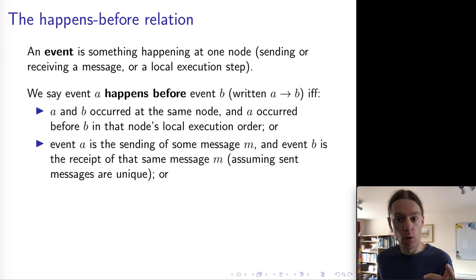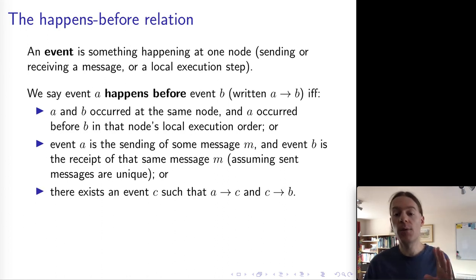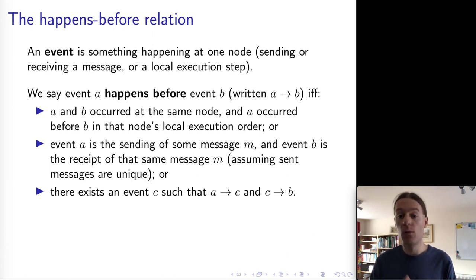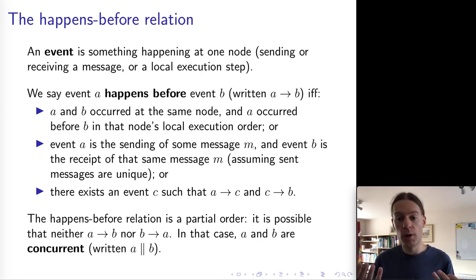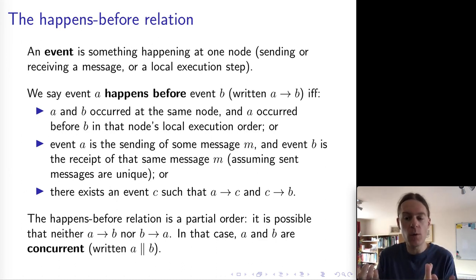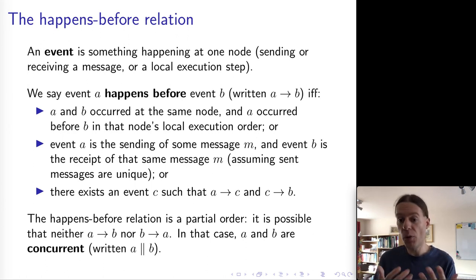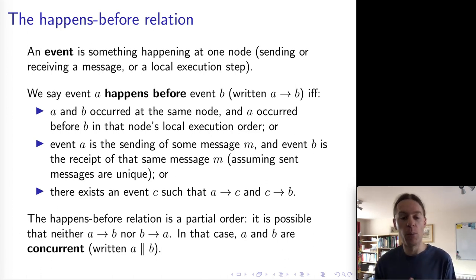A partial order behaves a bit like a less-than relationship. It allows you to compare two things and say which one happened first. But there might be some things that are incomparable — where it is not the case that A happened before B or B happened before A. The two are simply unrelated. In that case, we say A and B are concurrent, written with a parallel sign. For any two events A and B, there are exactly three possibilities: either A happened before B, or B happened before A, or the two are concurrent.